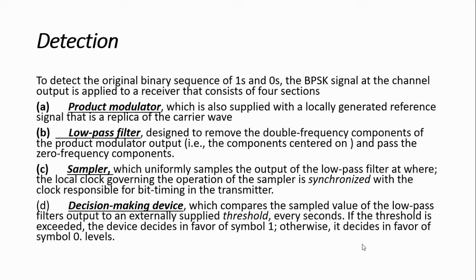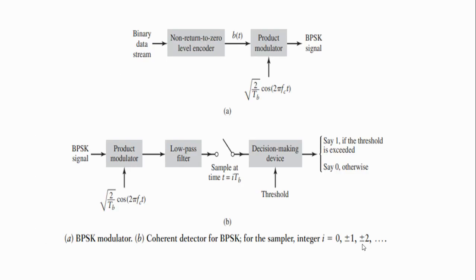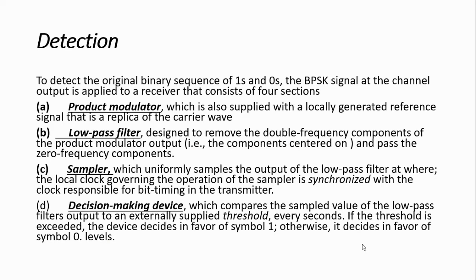To detect the original binary sequence 0 and 1, the BPSK channel output is given into the receiver. The receiver consists of four blocks: product modulator, low-pass filter, sampler, and decision-making device. The same carrier signal is multiplied with the BPSK signal in the product modulator. The low-pass filter removes the double frequency component and allows only the zero frequency component. The sampler uniformly samples the output of the low-pass filter, synchronized with the transmitter. The decision-making device compares the sampled value with the threshold: if exceeded, the device decides symbol 1; otherwise, symbol 0.